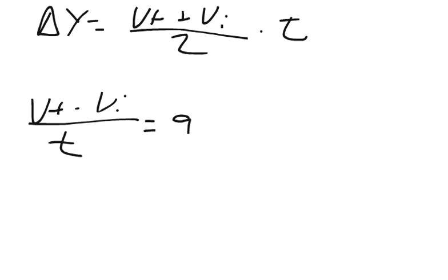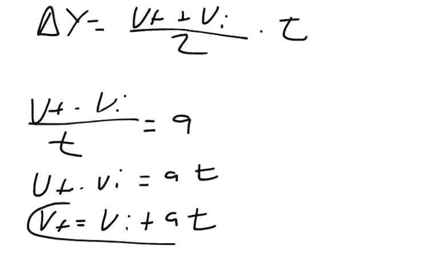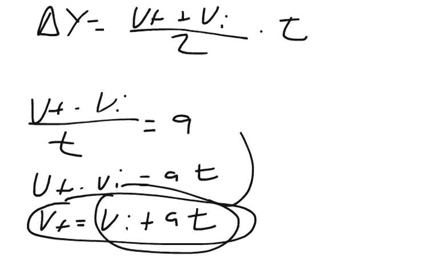And so we can solve for the final velocity. Final velocity minus initial velocity equals at. And final velocity equals initial velocity plus at. So I can take this portion of it and I can insert it right there.